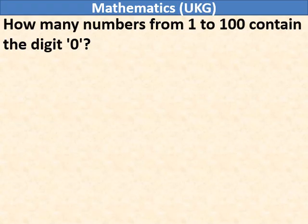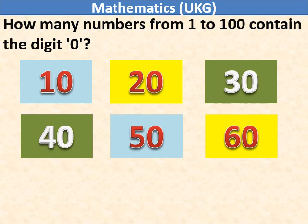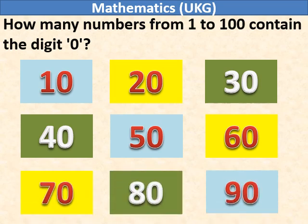How many numbers from 1 to 100 contain the digit 0? 10, 20, 30, 40, 50, 60, 70, 80, 90. There are nine such numbers.